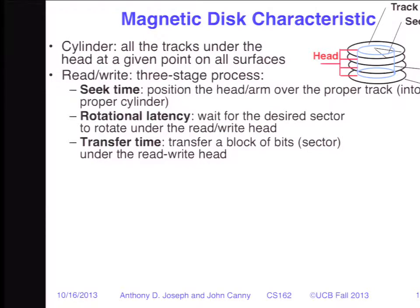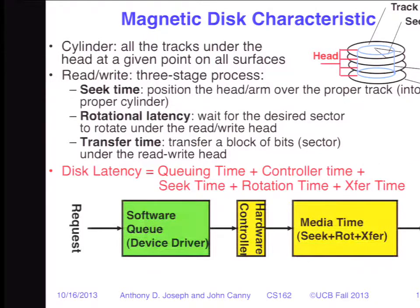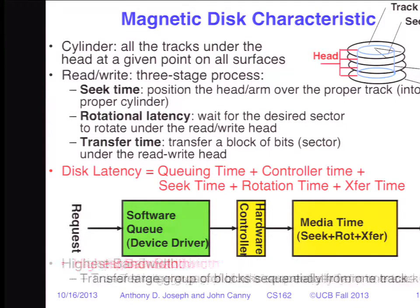There's more time associated with reading and writing. Total time includes delivering the request to the OS, queuing and processing by the device driver, sending it to the hardware controller — which has a DSP doing all the signal processing — and then the media time: seek to the track, wait for the sector to rotate under, then transfer. The highest bandwidth we get is when transferring a group of blocks sequentially from one track.